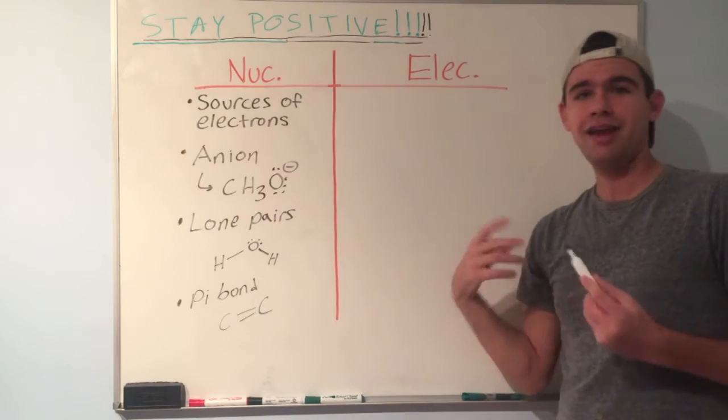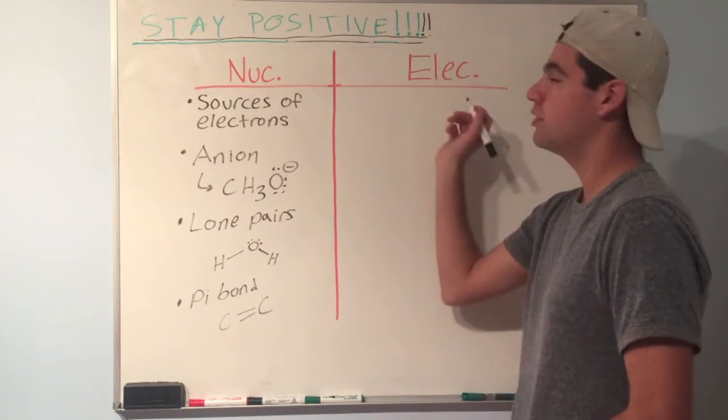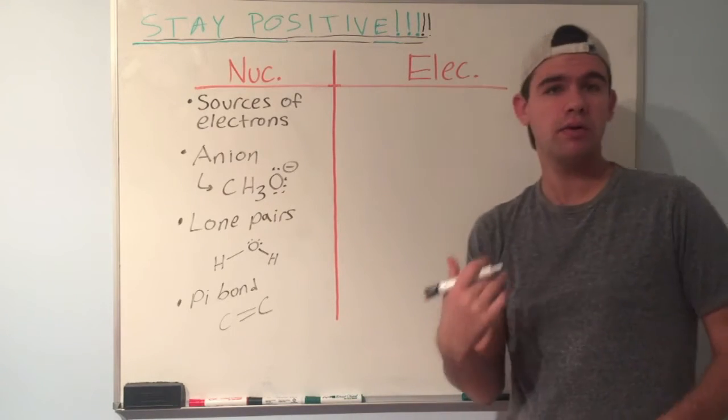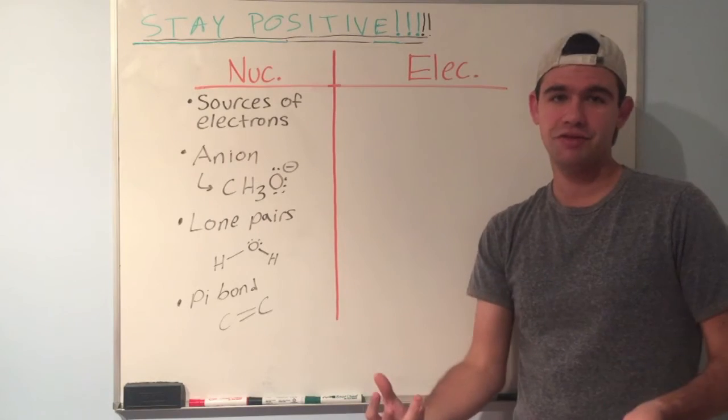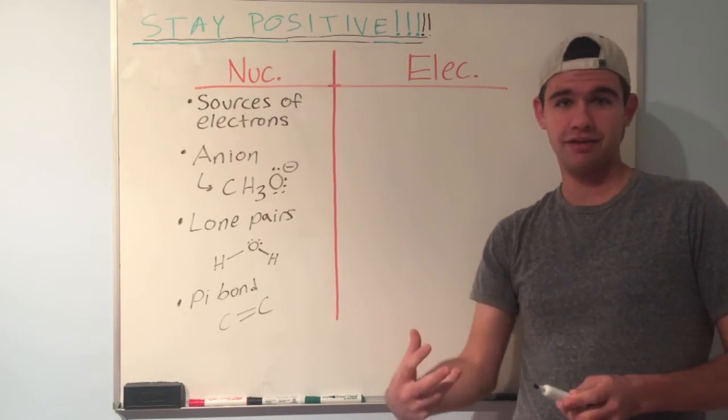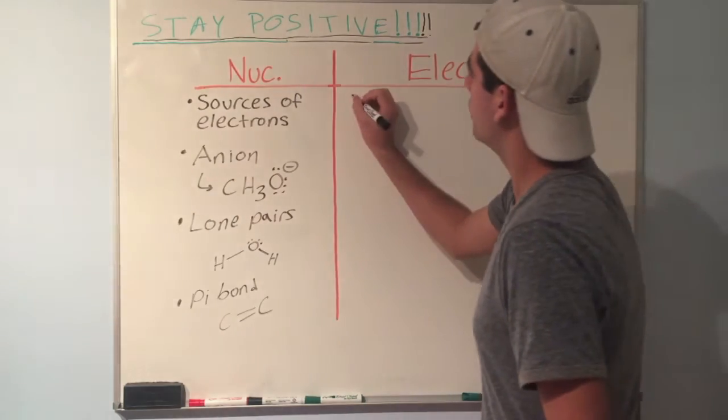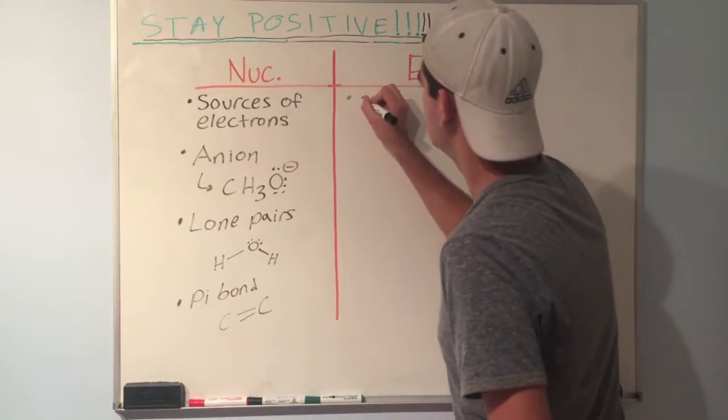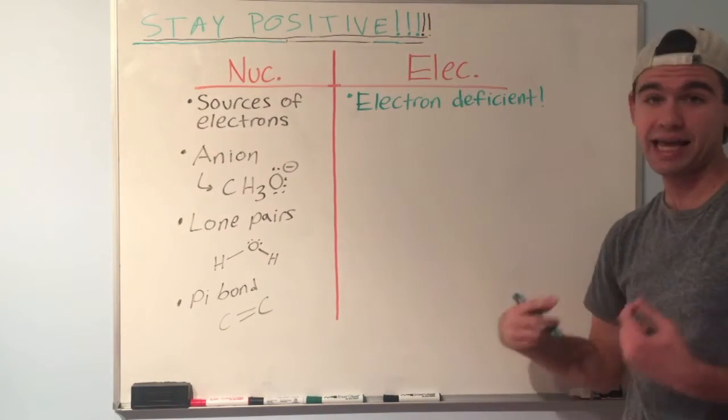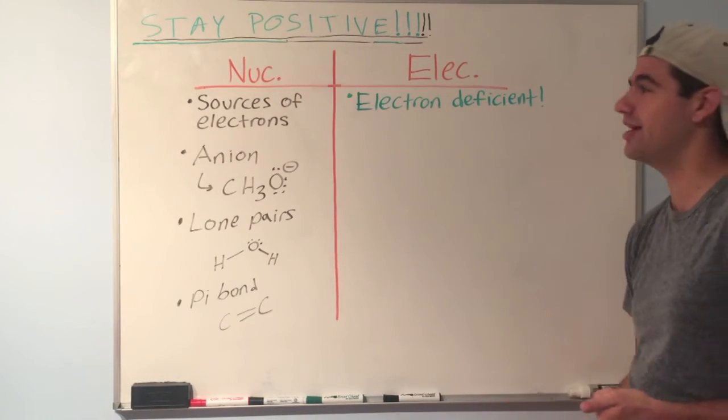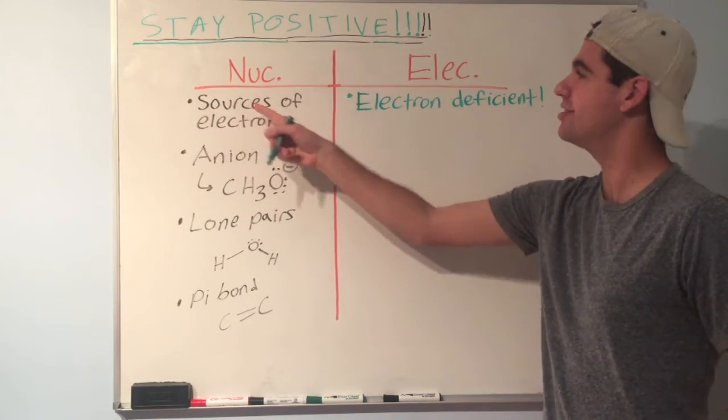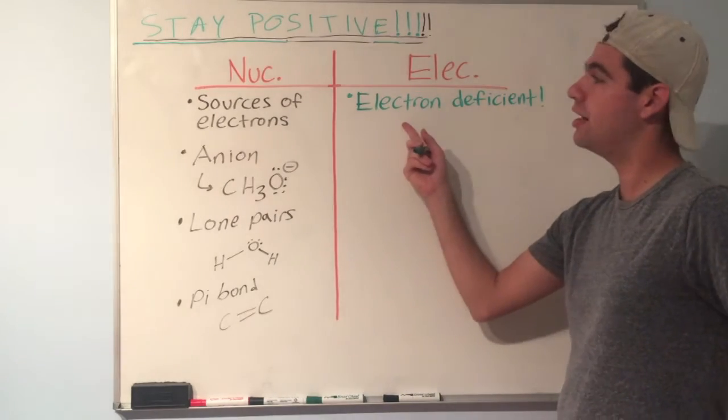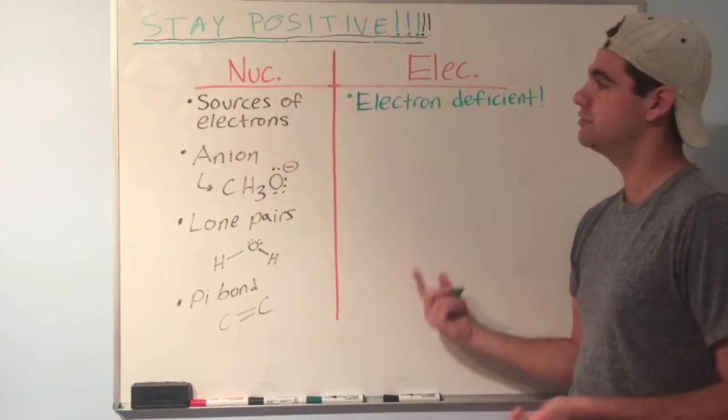Now let's talk about electrophiles. They're kind of the opposite in a way. Electro, you could think of electrons as in negative charge. And file, again, means like or love. So electrophiles like negative charge. And what types of things like negative charge? Positive charges. So electrophiles are electron deficient. They're electron deficient, meaning they're lacking electrons. They want some electrons. And that's exactly why we say the source of electrons attacks the species that needs the electrons. So what types of things want electrons?